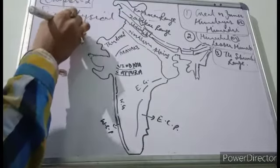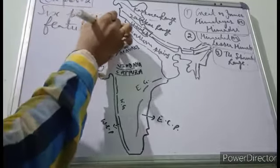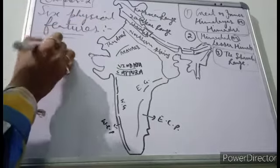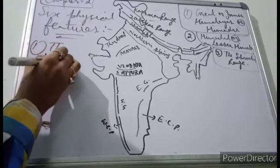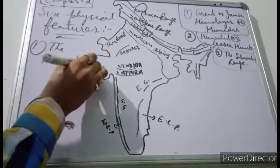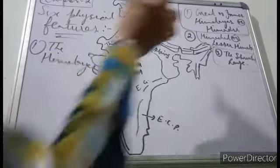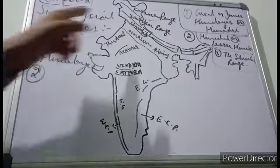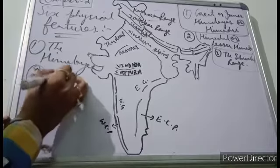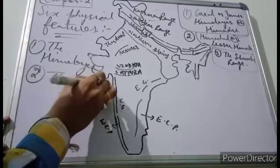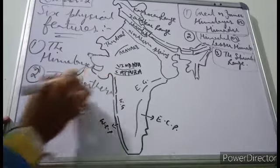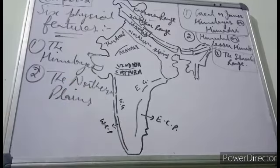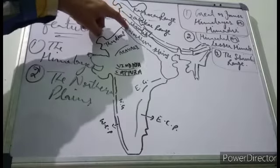India has six physical features. The first is the Himalayas, which have three types. The second physical feature is the Northern Plains. The Northern Plains begin from the Punjab region.